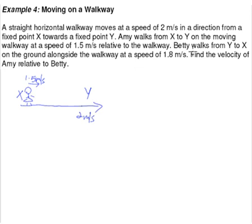Betty, another girl, walks from Y to X on the ground alongside the walkway. So Betty is not on the walkway but she's next to the walkway. So here we have another girl, Betty. She walks in the opposite direction. Therefore her velocity shouldn't be 1.8 but it should be negative 1.8 meters per second. So this is our girl Betty. This is our girl Amy. This is so far what the story is all about.